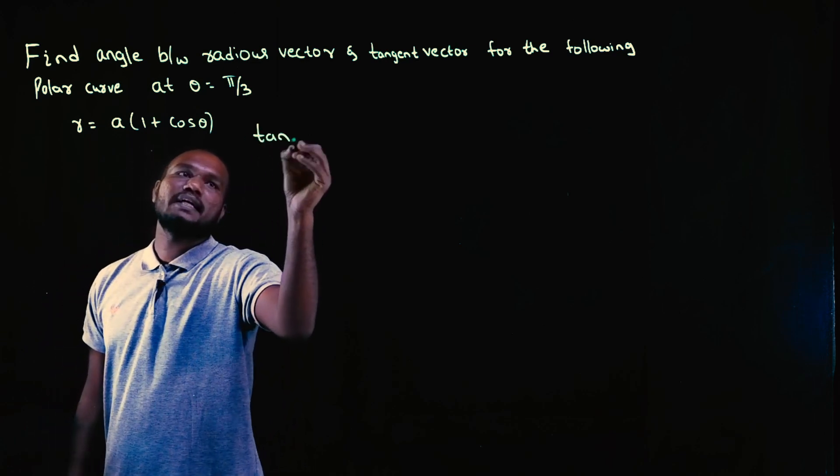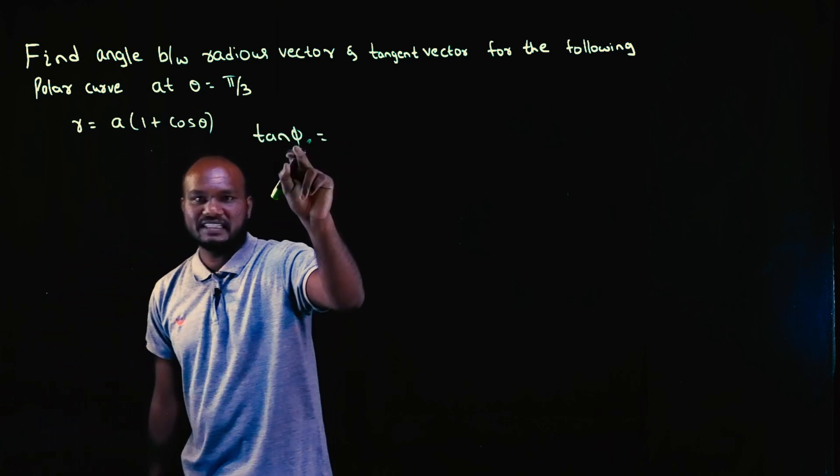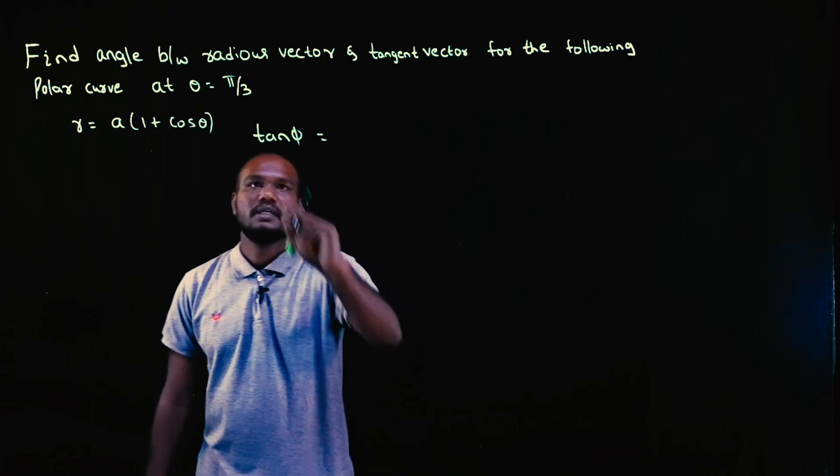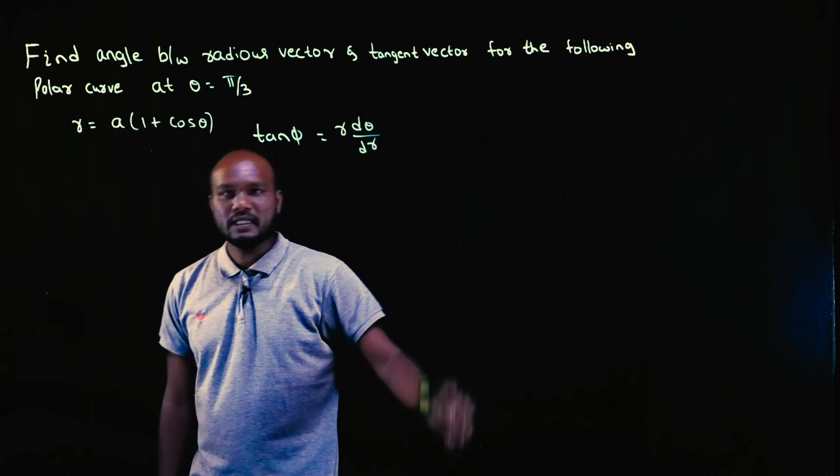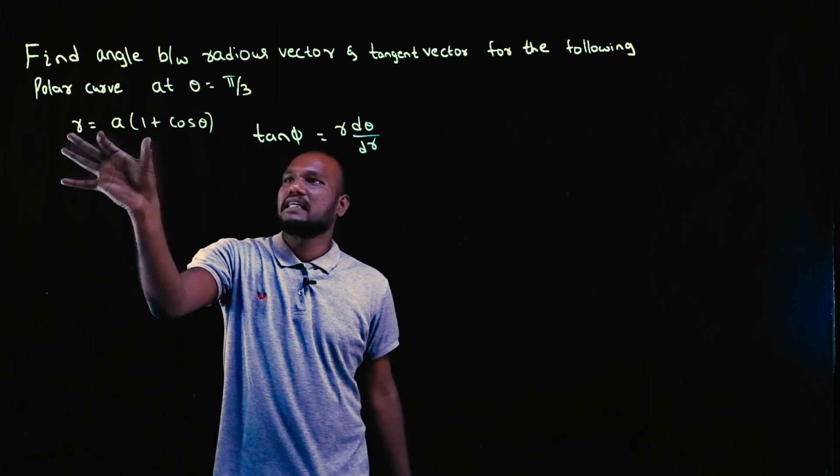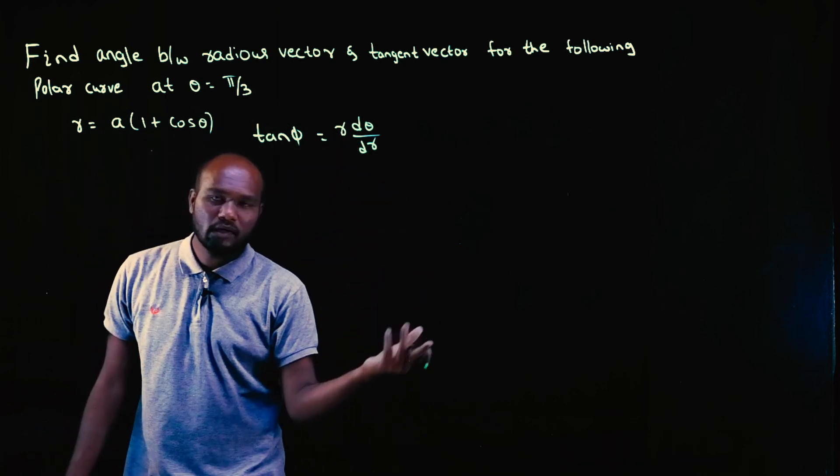So what to do? What is the formula to find tan phi? Phi is the angle between radius vector and tangent vector. So tan phi equals r times d theta by dr. R is directly available, we can just substitute. Whenever you can substitute R directly, no need to take log.